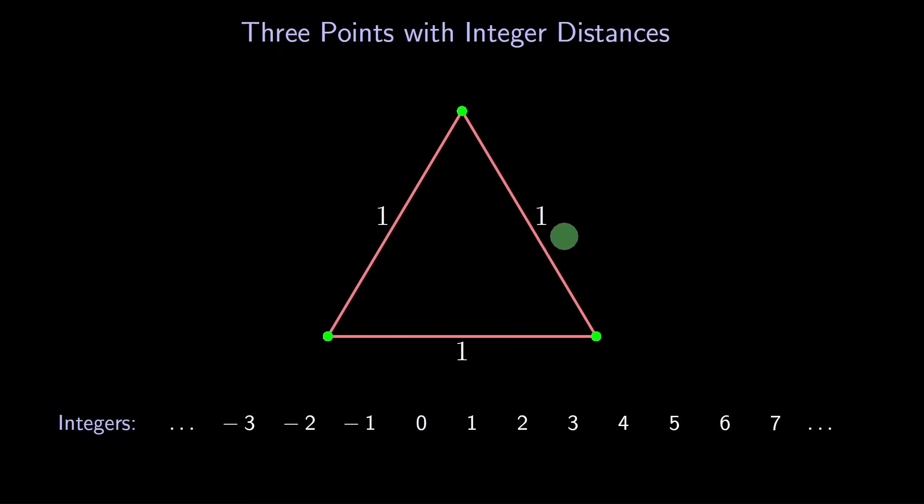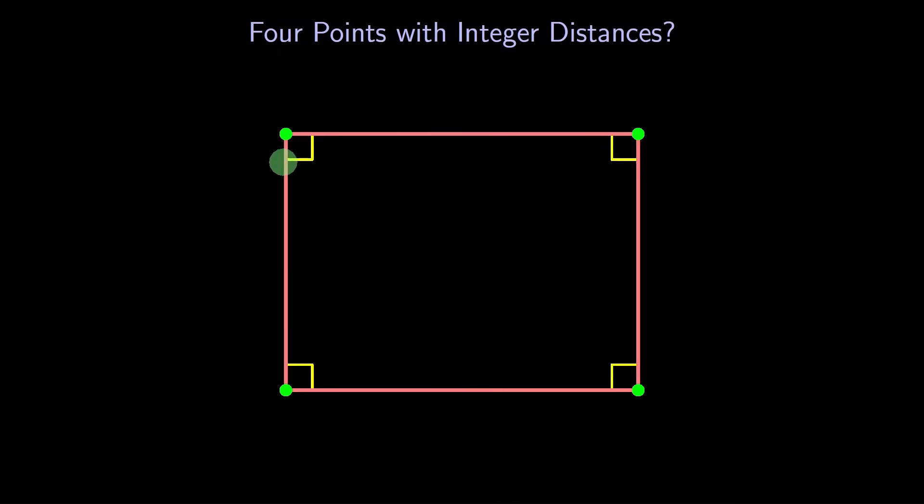Let's try four points. Can you find four points in the plane that are an integer distance apart? Yes. For example, the four points could form a rectangle. We can make the width three and the length four. What's the diagonal? By the Pythagorean theorem, it has length five. So all the distances are whole numbers.